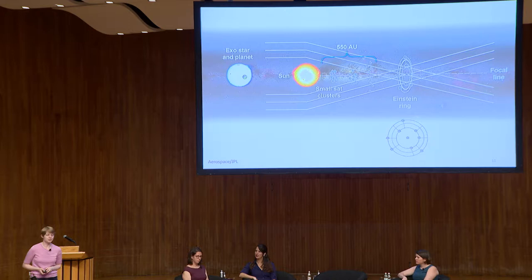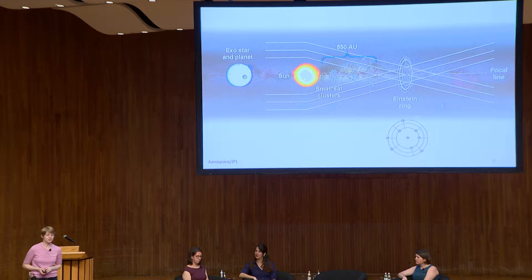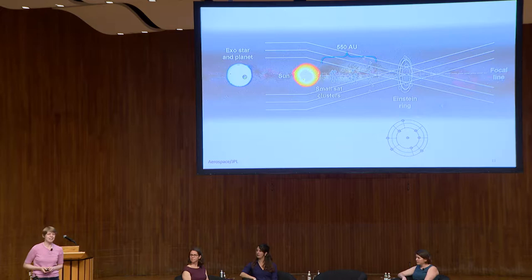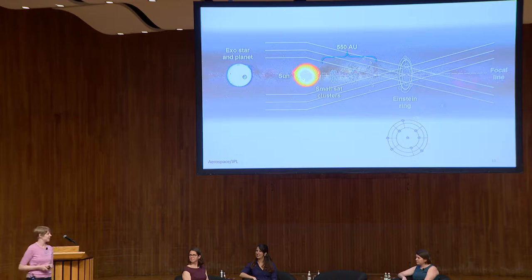Looking even farther, perhaps telescopes will look very different 50 years from now. Maybe we could use the Sun as a gravitational lens, allowing us to get a thousand pixels across in an image of a planet around a nearby star. I want to encourage all of you to think about telescopes that may look radically different from anything we see now.